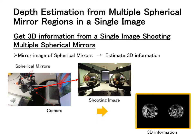This paper is about estimating depth information from a single image using multiple spherical mirrors. Consider multiple spherical mirrors placed in space and shot these. From a single image, the depth of the space is estimated using the geometric relationship between the spherical mirrors and the camera.